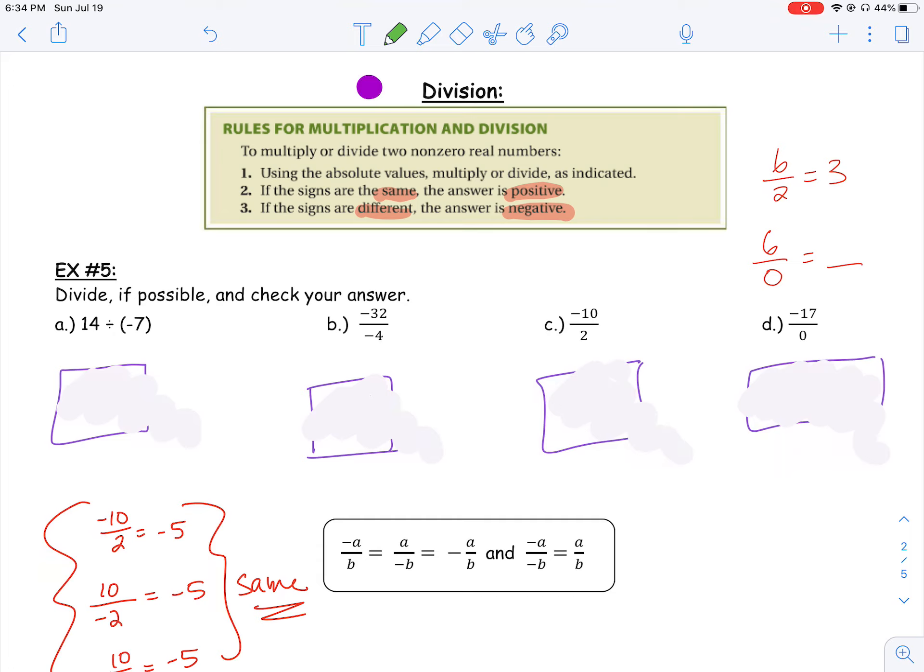Now, similar to multiplication, when I have two negative numbers and I divide them, my answer is always going to be positive. Or, if I have a positive number and I want to divide it by a negative number, or vice versa, my answer is going to be negative. So again, two negatives make a positive, and if I have opposite signs, my answer is going to be negative.